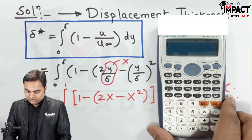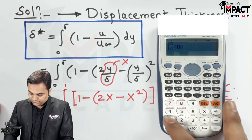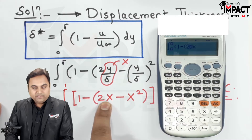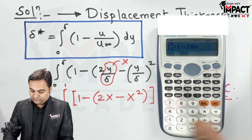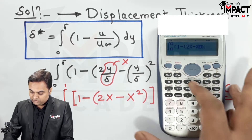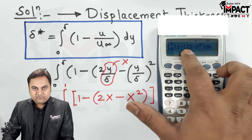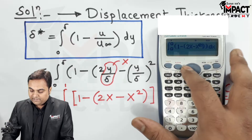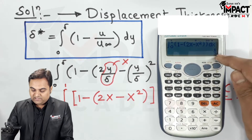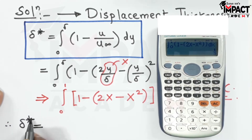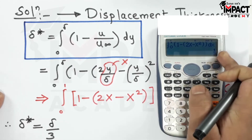On the calculator, press the integration sign, then write the function: 1 minus bracket (2x minus x²) close bracket, with limits 0 to 1, and press equals. The calculator gives 1/3. Since this is just the coefficient, the final answer for displacement thickness is delta star = δ/3.